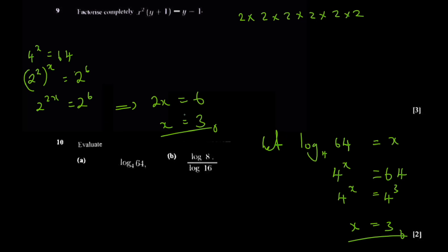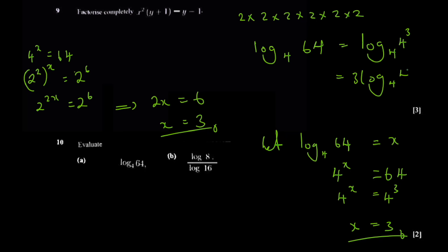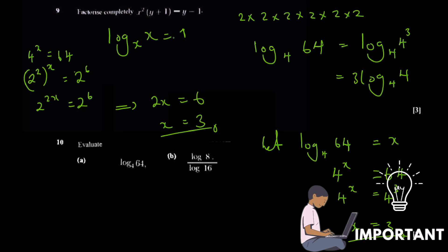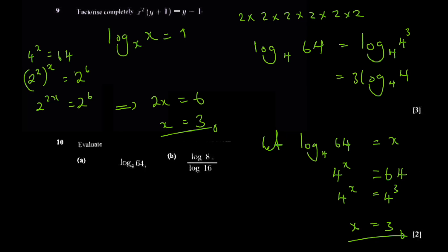The second, faster method: write log base 4 of 64, then express 64 as 4 cubed, so you have log base 4 of (4 to the power 3). By the power law of logarithms, you bring the 3 to the front: 3 times log base 4 of 4. Since log base x of x always equals 1, this becomes 3 times 1, which equals 3. This is faster, but requires confident knowledge of logarithm laws.